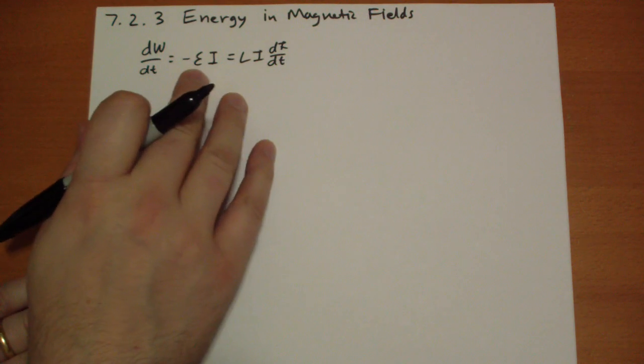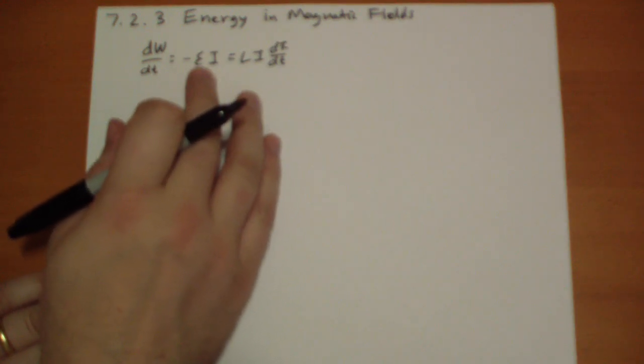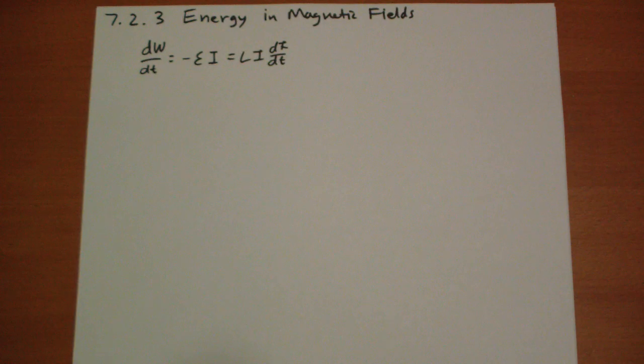So why is it this epsilon I? Remember that we have Ohm's Law. It says there's some force pushing the current through a conductor, and so it's just the force times the velocity, basically, of the charge. That's all that really is. Makes a lot of sense.